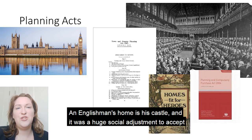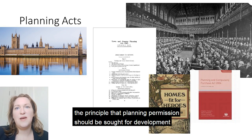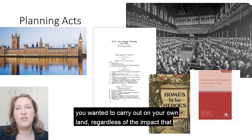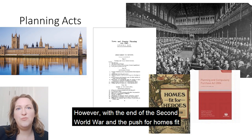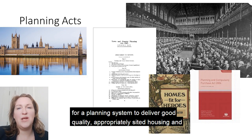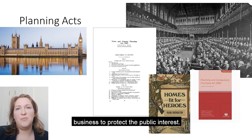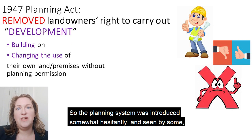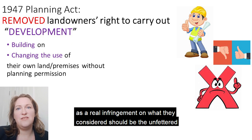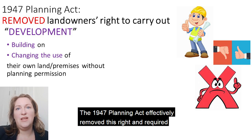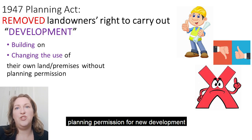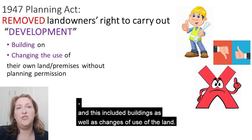An Englishman's home is his castle and it was a huge social adjustment to accept the principle that planning permission should be sought for development you wanted to carry out on your own land, regardless of the impact that development had on surrounding land uses. However, with the end of the Second World War and the push for homes fit for heroes for returning soldiers, there was an acceptance of the need for a planning system to deliver good quality, appropriately sited housing and business, to protect the public interest. So the planning system was introduced somewhat hesitantly and seen by some as a real infringement on what they considered should be their unfettered right as landowners to build on their own land as they wished. The 1947 Planning Act effectively removed this right and required planning permission for new development, including buildings as well as changes of use of the land.